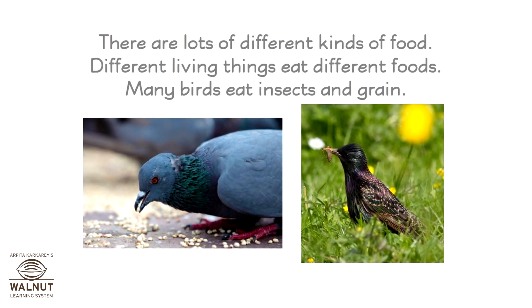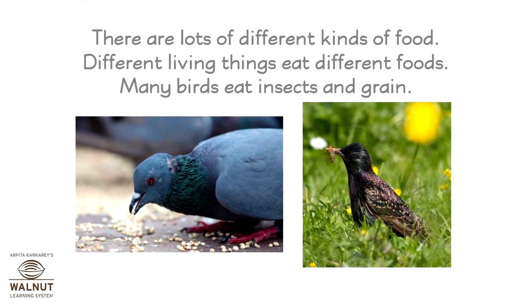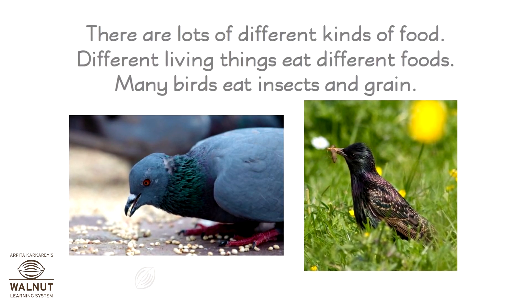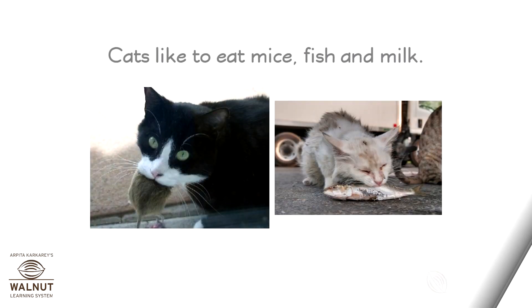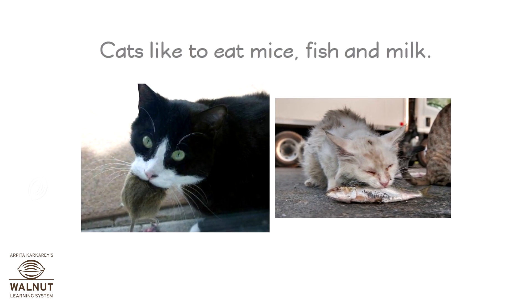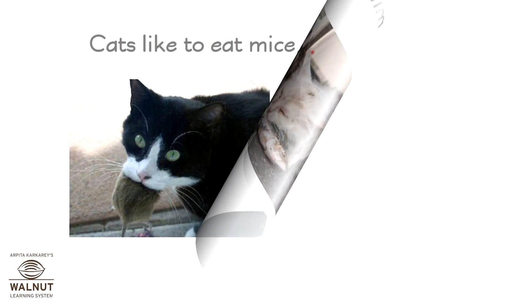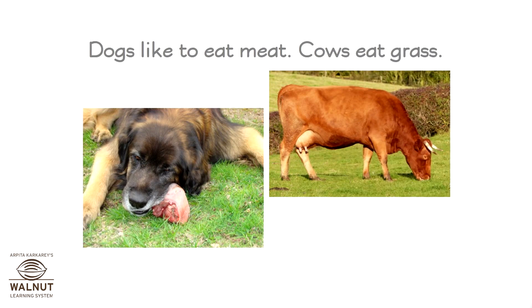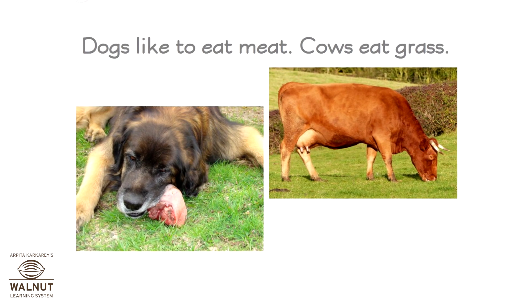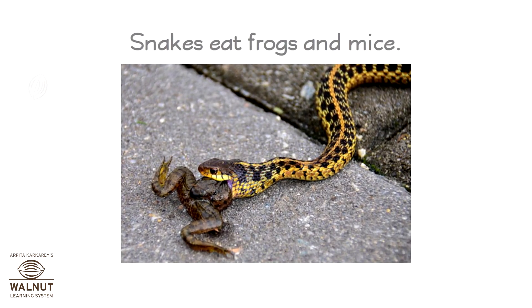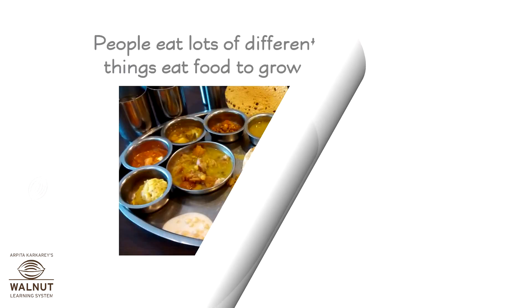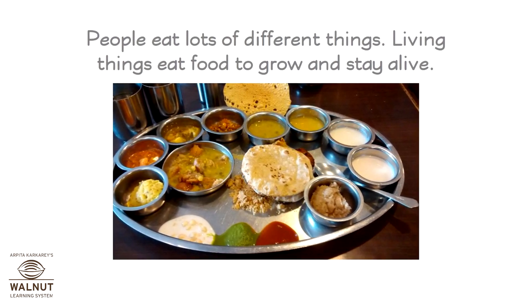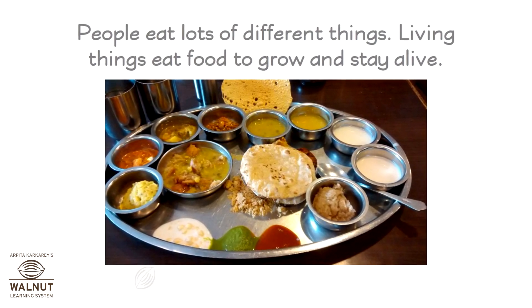There are lots of different kinds of food. Different living things eat different foods. Many birds eat insects and grain. Cats like to eat mice, fish and milk. Dogs like to eat meat. Cows eat grass. Snakes eat frogs and mice. People eat lots of different things. Living things eat food to grow and stay alive.